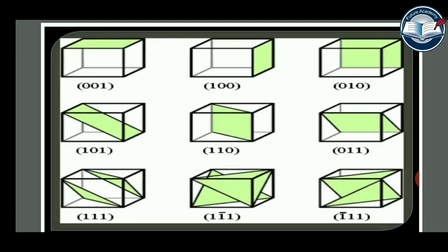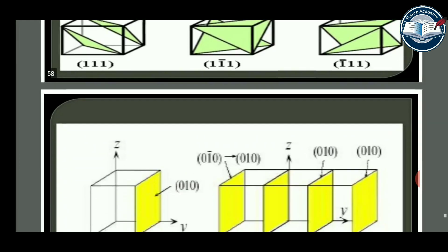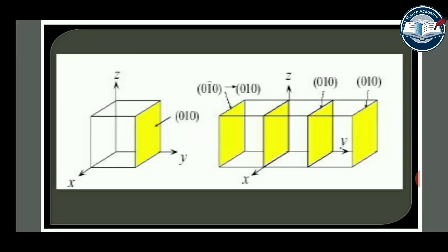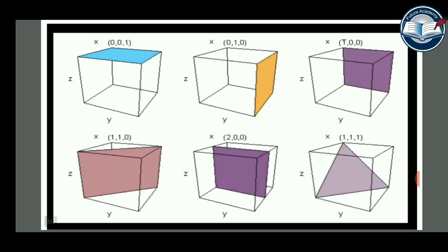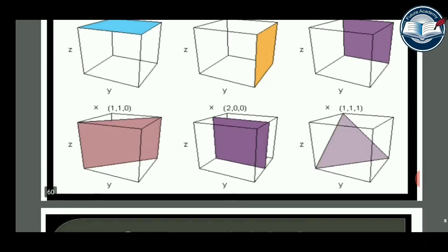Examples of crystal planes in figures: the plane (0 1 1) has intercepts along Y and Z axes of 1 each; the plane (0 1 0) cuts only the Y-axis; the plane (0 0 1) cuts only the Z-axis at 1. These figures illustrate various Miller index planes including (1 1 0), (1 0 1), and related planes in the crystal lattice.